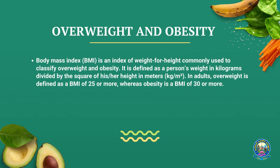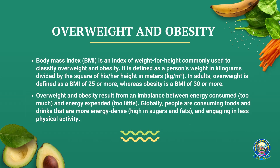Moving on to overnutrition, which includes overweight, obesity and non-communicable diseases. BMI is the index used to measure overweight and obesity. If BMI is above 25, it is termed overweight; if it exceeds 30, it is termed obesity. Obesity and overweight result from an imbalance between energy consumed and energy expended. Globally, people are consuming more energy-dense foods and drinks and engaging in less physical activity, which leads to overnourishment.